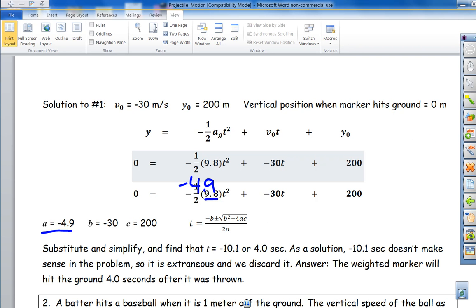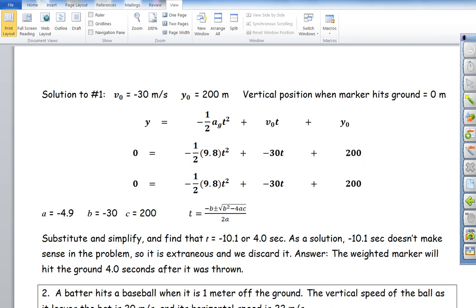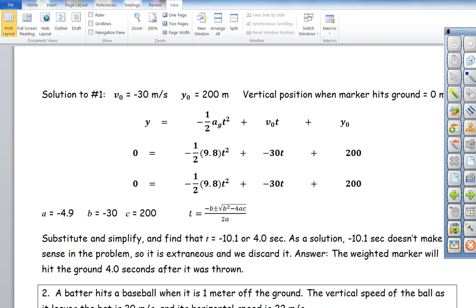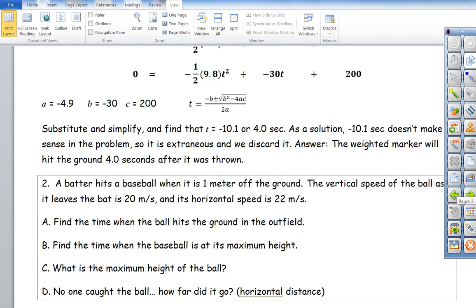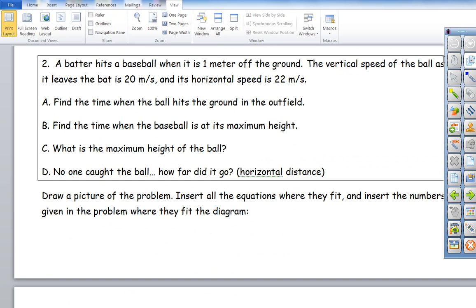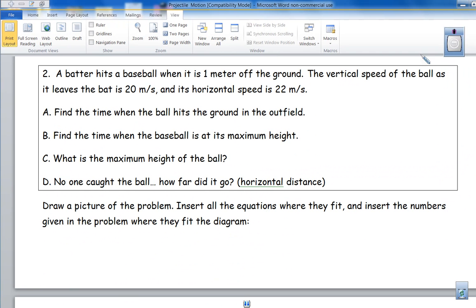The next question I'm just going to talk about also because it's worth talking about. Here again we're going to draw it maybe as we go. A batter hits a baseball when it's one meter off the ground, so here's my person who's a batter and here's the ground.